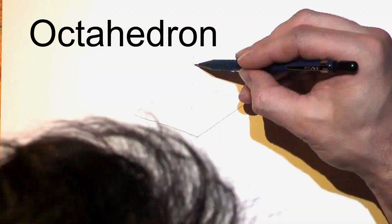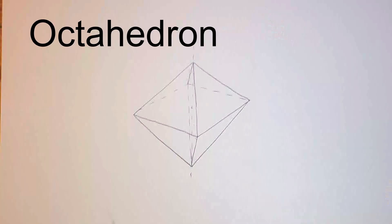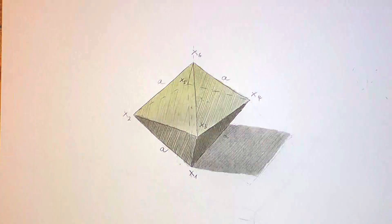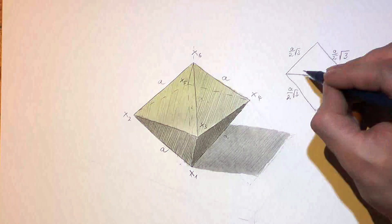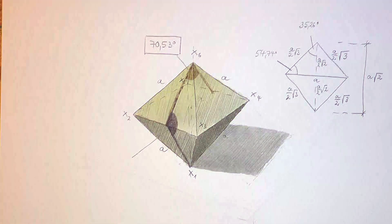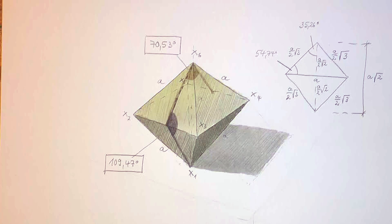The third solid is the octahedron, two four-sided pyramids with their bases attached to each other. But when we want to cut it from solid wood, it's better to see it as four pairs of opposing parallel faces that are equilateral triangles, rotated by 60 degrees.